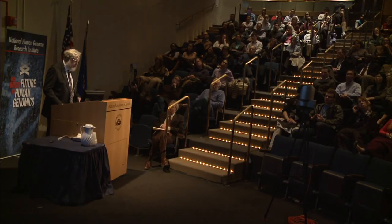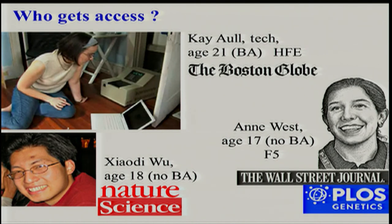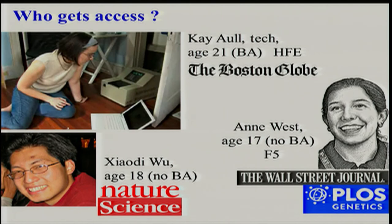Here are three more examples, more up-to-date and genomically oriented. Kay Aul was interested in hemochromatosis because her father had it, so she did it herself, literally in her closet, with an eBay PCR machine. Ann West, in 11th grade, analyzed all four members of her family — her father had Factor V Leiden — and set a new bar for 11th grade science projects. And Shoudi Wu, in 2007, was assigned what I thought was a ridiculous task: taking genomes in and popping interpretations out. He didn't know I was kidding, actually did it, and got a Science and a Nature paper out of that.